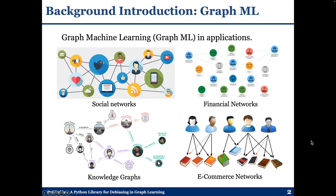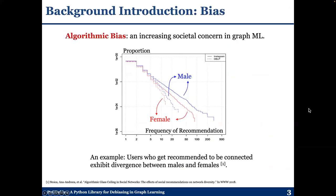Graph machine learning methods have been widely adopted in different kinds of applications based on graph data — for example, social networks, financial networks, knowledge graphs, and e-commerce networks. However, there is an emerging threat, which is algorithmic bias. Algorithmic bias has become an increasing societal concern in the area of graph machine learning.